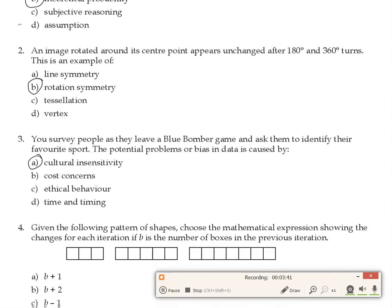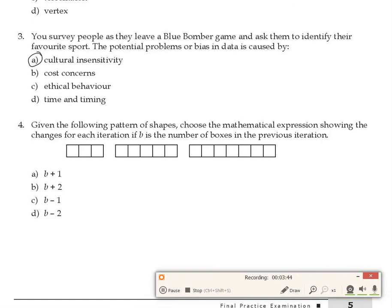Question 4: Given the following pattern of shapes, choose the mathematical expression showing the change for each iteration, where B is the number of boxes in the previous iteration. We have three boxes in the first iteration, five boxes in the second — that's three plus two. So each iteration we add two more boxes from the previous example.